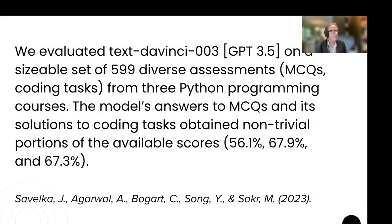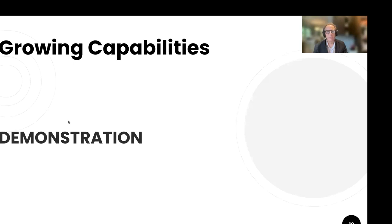This example is from computer science using GPT-3.5, which will have changed a lot with GPT-4. For second-year Python programming, the model was able to answer questions scoring 56.1, 67, and 67.3 percent — it didn't ace the course, but the researchers noted it would have been able to pass it. The capabilities of these tools are growing very quickly.